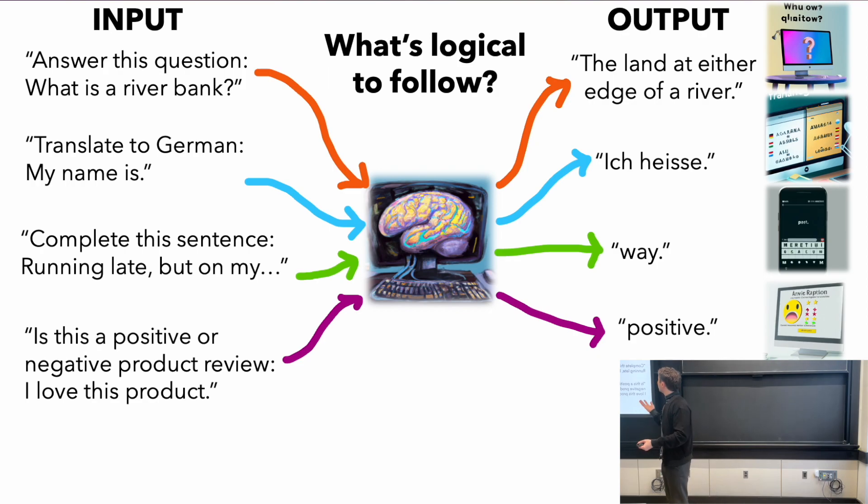If you give it the input 'Answer this question: What is a river bank?' and let it run until it produces a period, it will output 'The land at either edge of a river.' It's quite amazing, but also that's the most sensible answer in some sense. If you ask 'Translate to German: My name is,' it'll output the translation because it's also the most sensible completion. Of course, you can do autocomplete in this sense, but also classification. If you're asking 'Is this a positive or negative product review: I love this product,' the most sensible output here is to generate the actual thing you're looking for because it's trained on human data on the internet that behaves in human ways. It replicates that.